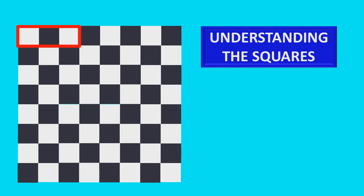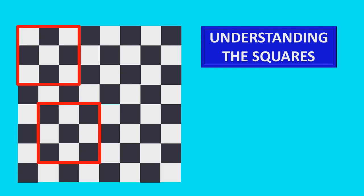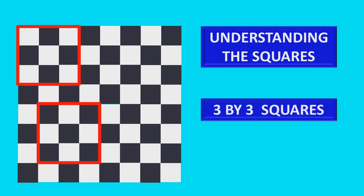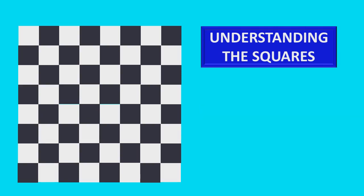Similarly, three single squares do not make a square, so we need a pattern like this. There are so many squares in this pattern. These squares are known as 3 by 3 squares. Similarly, this pattern of squares is known as 4 by 4 squares.